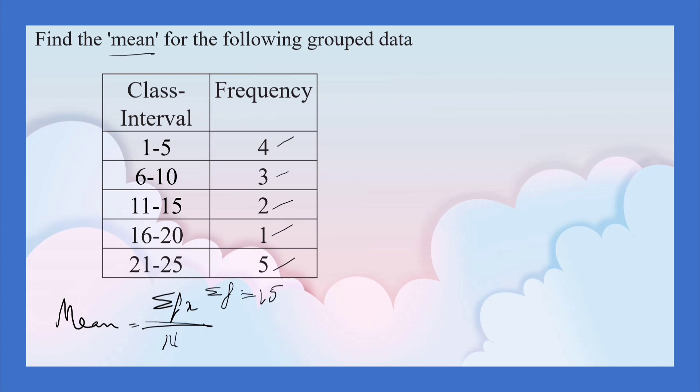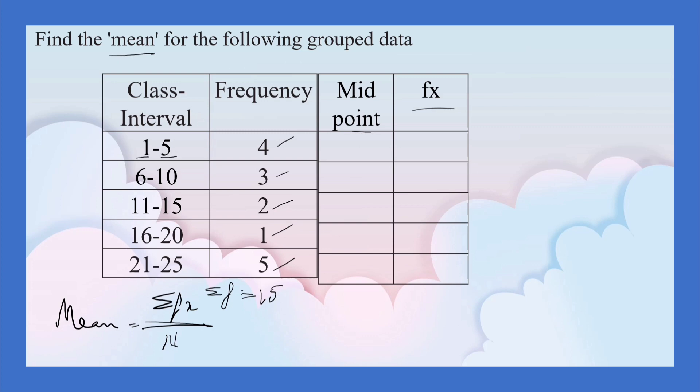Let us create two more columns. One for midpoint and another for f into x. How to find the midpoint? Lower class limit plus upper class limit, 1 plus 5 by 2. What is it? 6 by 2. It is 3 here.